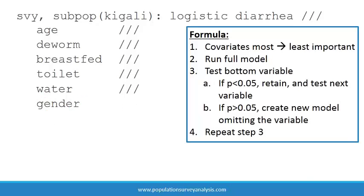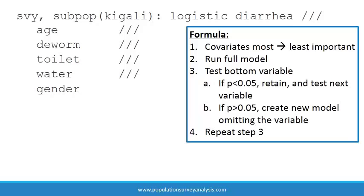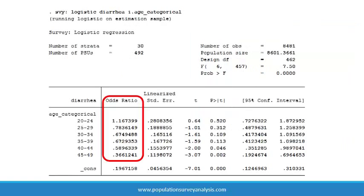Finally, repeat step 3 until you are left with only covariates that are significant at p less than 0.05, or covariates that you decided were important to keep in the model regardless of statistical significance.